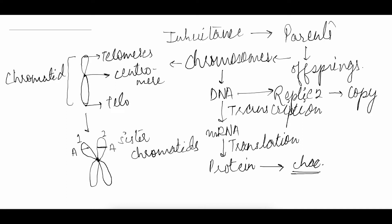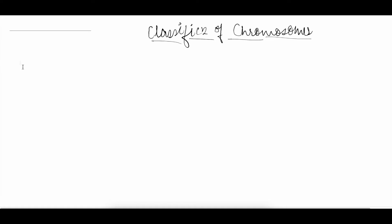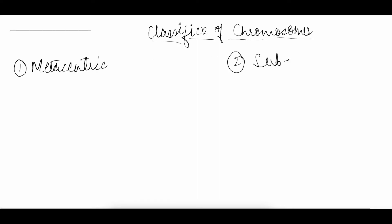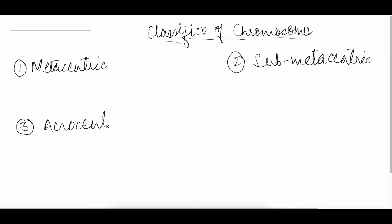Based on the position of the centromere, chromosomes are classified into different types. The classification is as follows: first is metacentric, second is sub-metacentric, third is acrocentric, and fourth is telocentric.